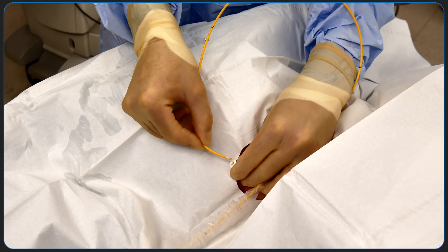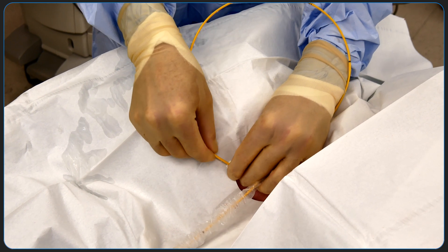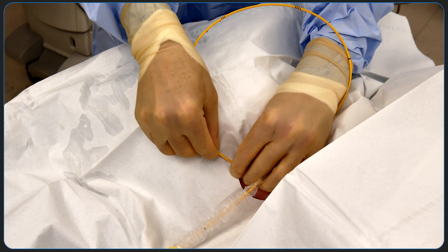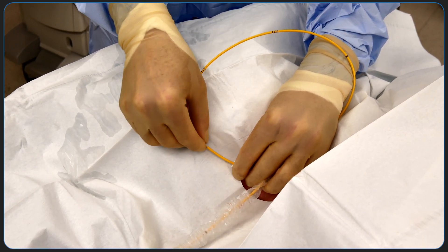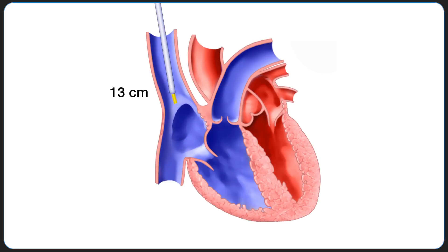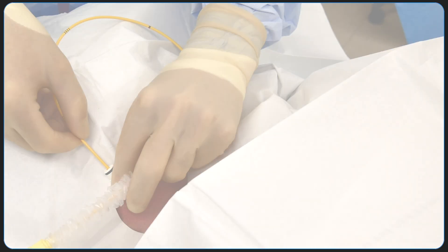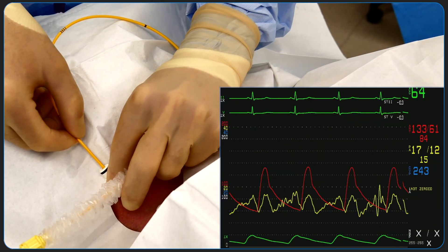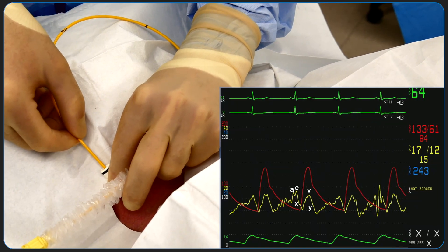We will now demonstrate insertion of a PA catheter in a patient. The PA catheter is first advanced through the introducer sheath to the 20 cm marking with the balloon deflated. It is important to recognize, however, that the catheter emerges at 13 cm. The tracing on the monitor should be observed carefully at all times. As the catheter rests in the right atrium, the monitor demonstrates a CVP waveform. The three peaks and two troughs are visualized.